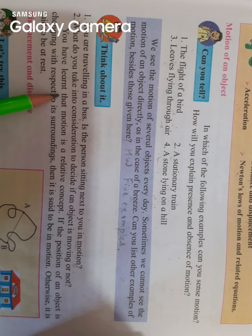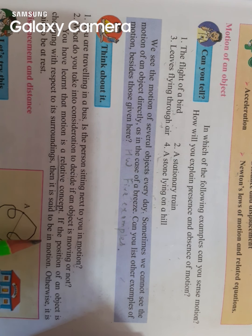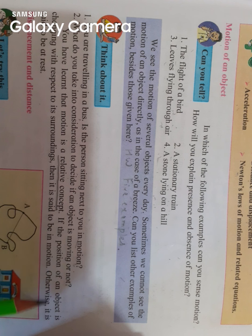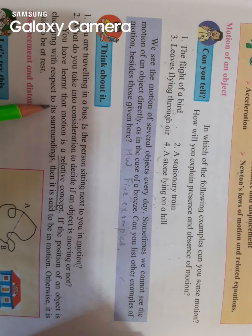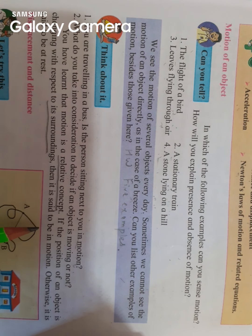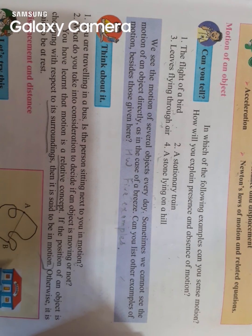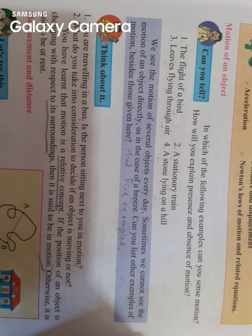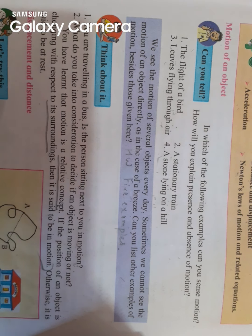Similarly, you have learned that motion is a relative concept. If the position of an object is changing with respect to its surrounding, then it is said to be in motion. So please take down this as a definition: if the position of an object is changing with respect to its surrounding, then it is said to be in motion.